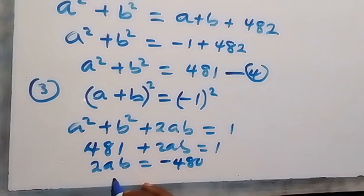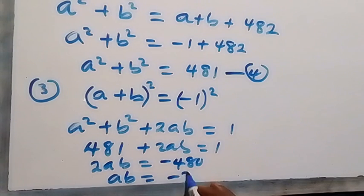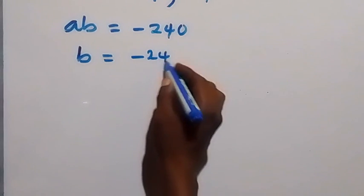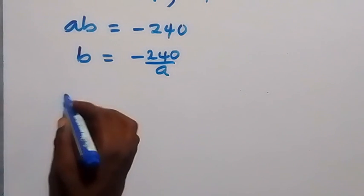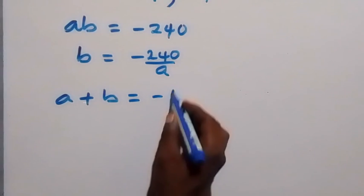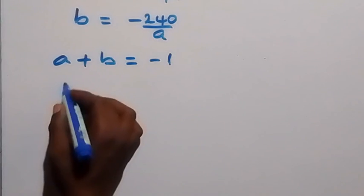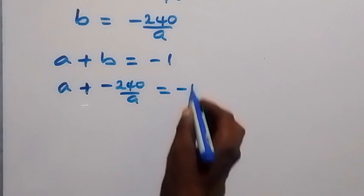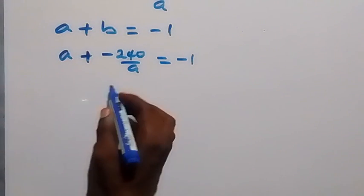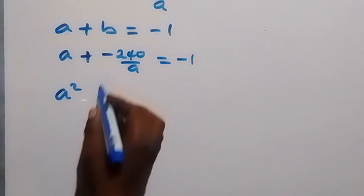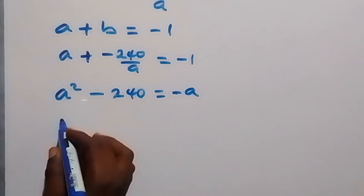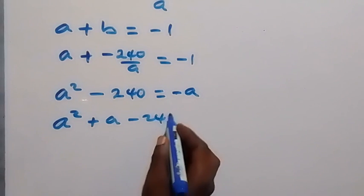When we divide both sides by 2, we have ab equals minus 240. Then dividing both sides by a to make b the subject, we have b equals minus 240 over a. From equation 3, a plus b equals minus 1. We substitute for b, so we have a plus (minus 240 over a) equals minus 1. Multiplying through by a: a squared minus 240 equals minus a, giving us a squared plus a minus 240 equals 0.